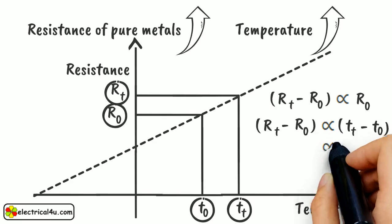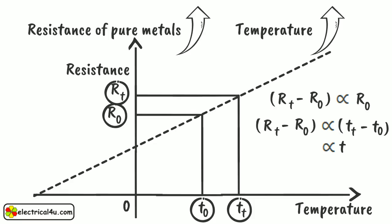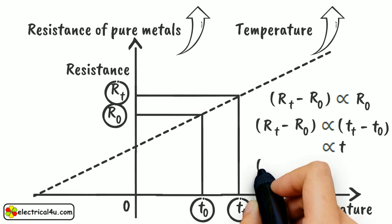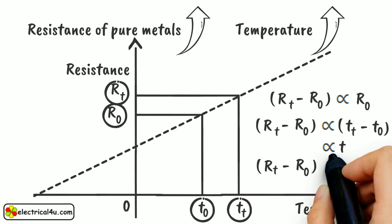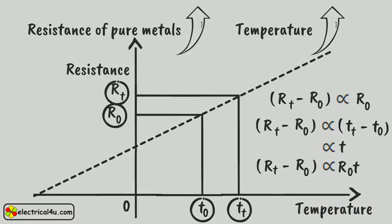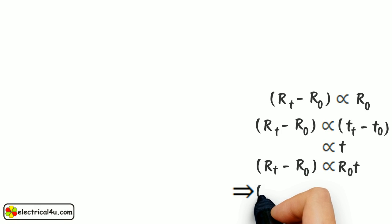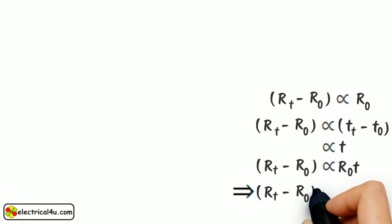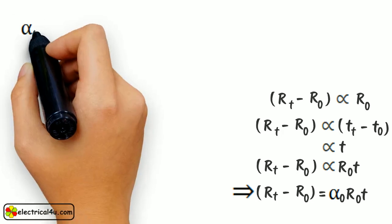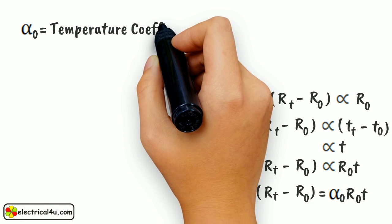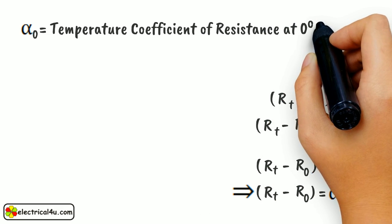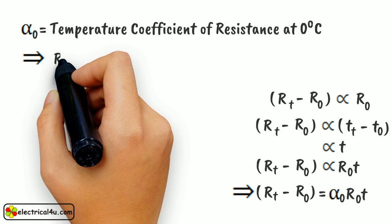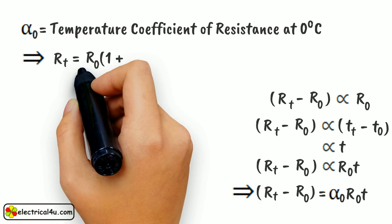Let's say it is T. This change also depends upon the nature of the material. For same temperature variation, different metallic conductors of same resistance show different changes in their resistance. Thus, we can express the change in resistance as RT minus R0 is directly proportional to R0 into T, or RT minus R0 equals alpha 0 R0 into T, where alpha 0 is also called the temperature coefficient of resistance at 0 degrees centigrade, or RT equals R0 into 1 plus alpha 0 T.